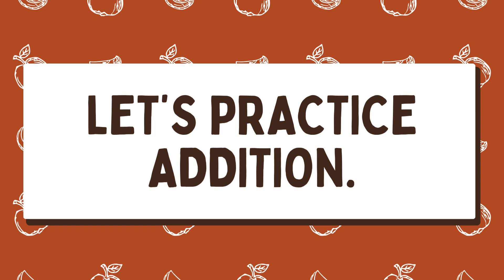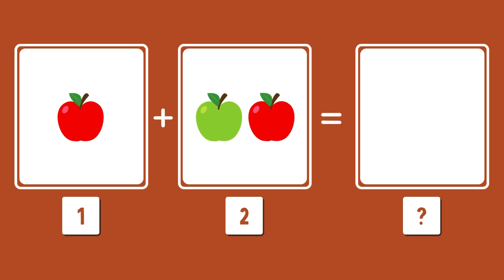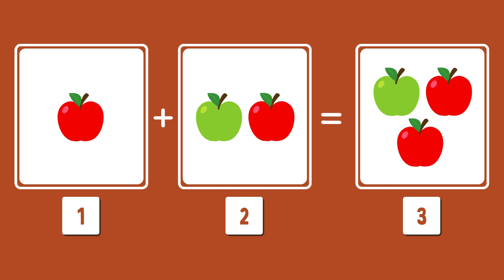Let's practice addition with some more examples. What do you see? There is one green apple and one red apple. Together, they are two apples. Let's move to the next one. One apple and two more apples make three apples.